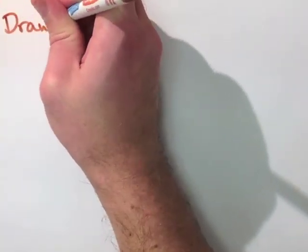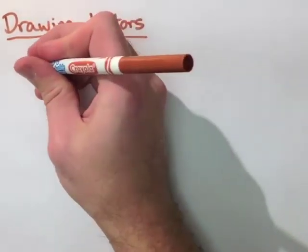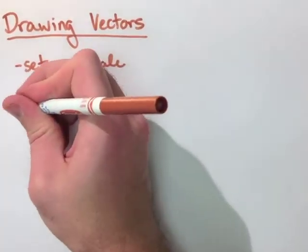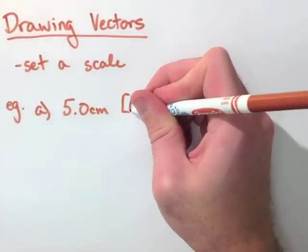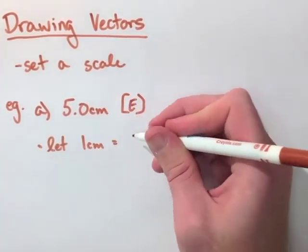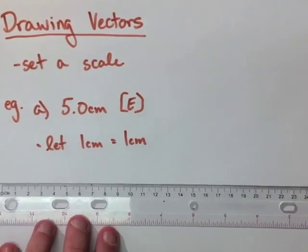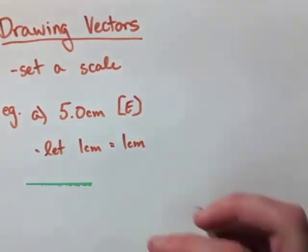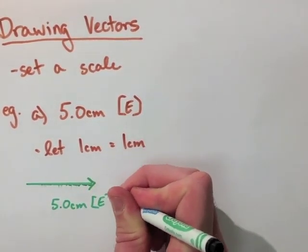Now let's look how to draw a vector. This is a pretty simple process, but there's a couple things we have to do. First being set a scale. Using the examples we have here, we have 5 centimeters east. Let's set our scale to be 1 centimeter equals 1 centimeter. Then all we have to do is measure out 5 centimeters in the east direction, and then we have to label our vector. So we have labeled 5 centimeters east.